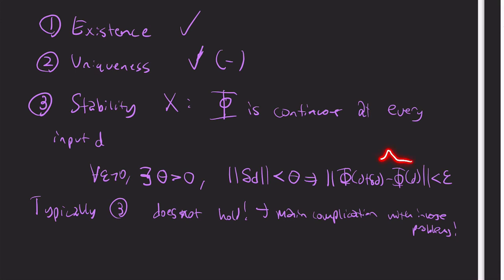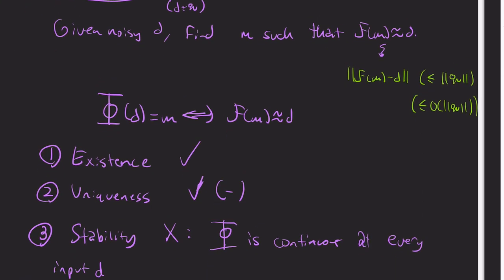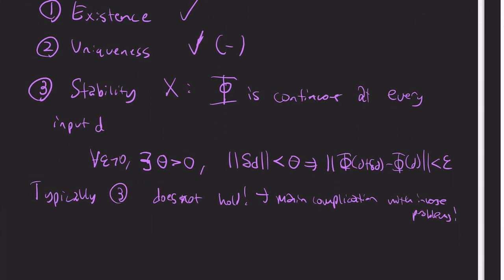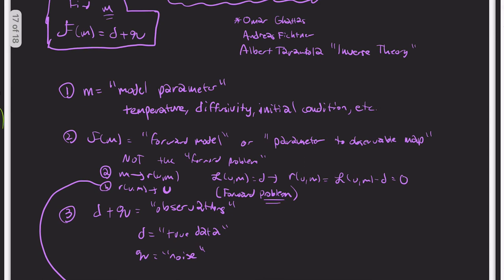And in the next video, I'll show you an example where this bound here on the right, even for a 1D problem, can get exponentially bad. So they're extremely ill-posed. And this is, again, the main complication with inverse problems that we have to work around.